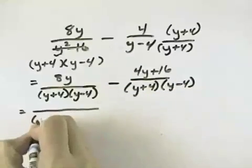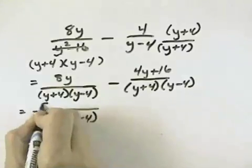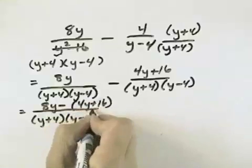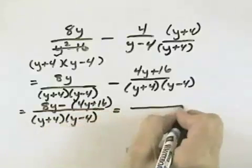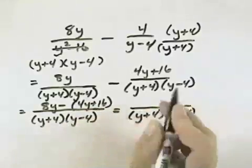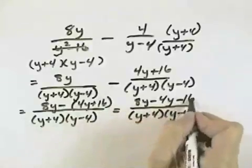Now we are ready to combine over our common denominator, so we'll take the numerator of 8y and we'll subtract from that 4y plus 16, so that over our common denominator of y plus 4 times y minus 4, we'll have 8y minus 4y minus 16.